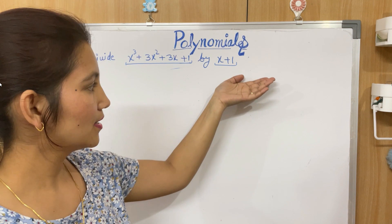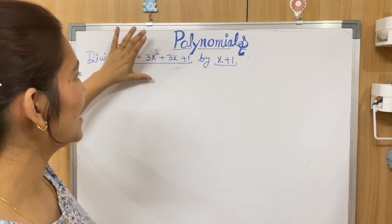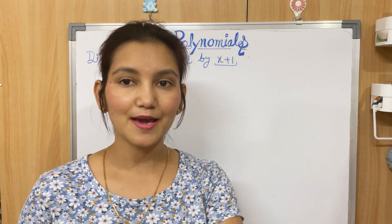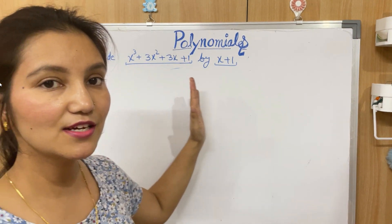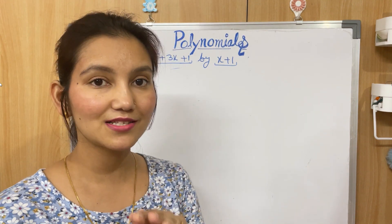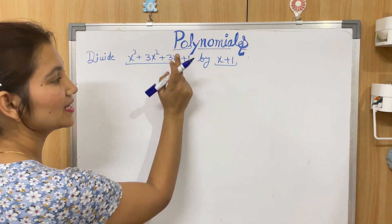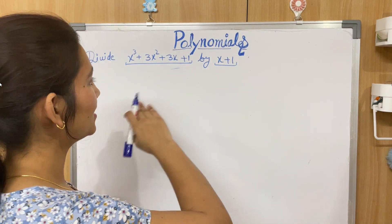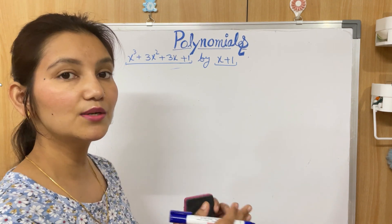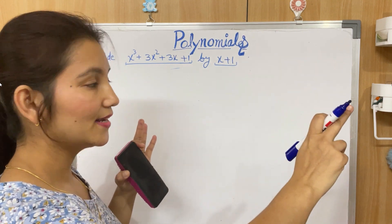Before we actually divide polynomials, we need to make sure that both the divisor and the dividend are written in standard form — meaning the powers of the variable must be in decreasing order. Check the powers of the variables. If they are not in decreasing order, reshuffle the terms to bring them into standard form.